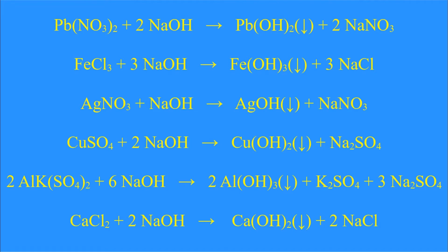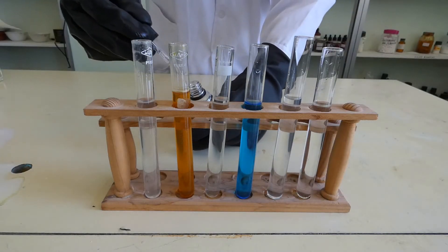These are the chemical reactions that are going to occur. In the first one, for example, lead-2-nitrate reacts with sodium hydroxide. Lead-2-hydroxide is formed, which precipitates, and sodium nitrate, which remains dissolved.